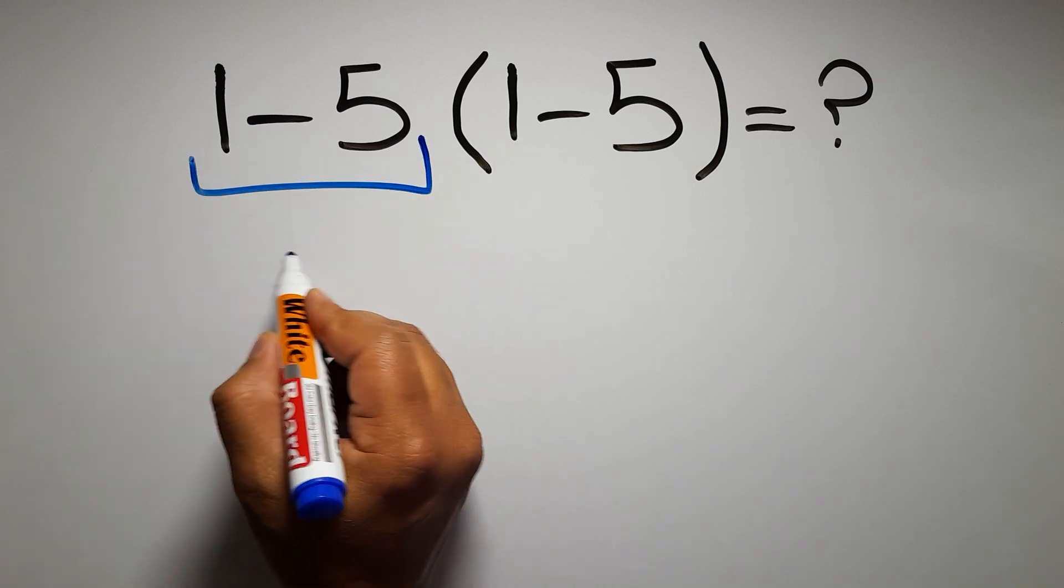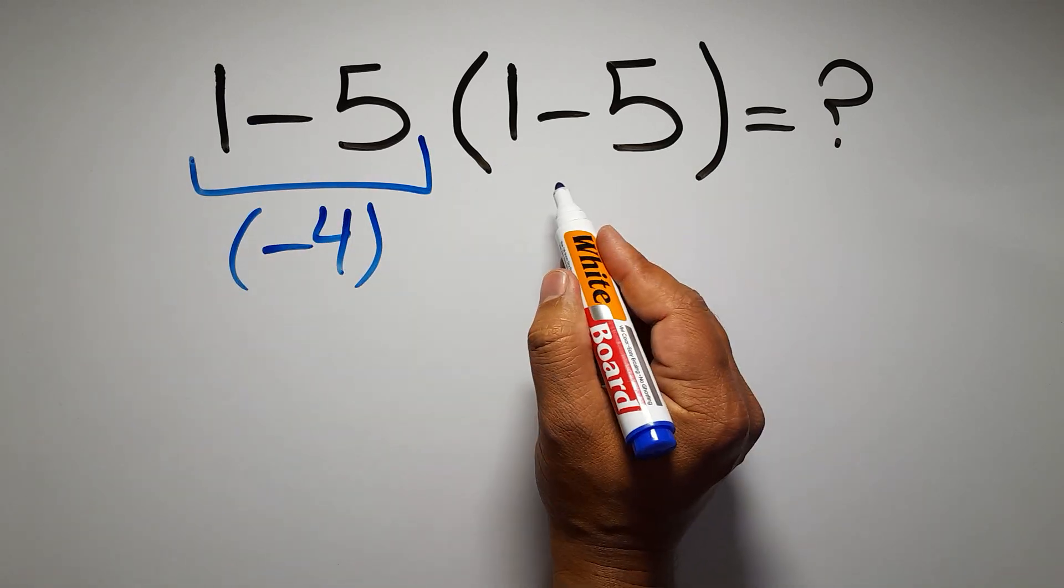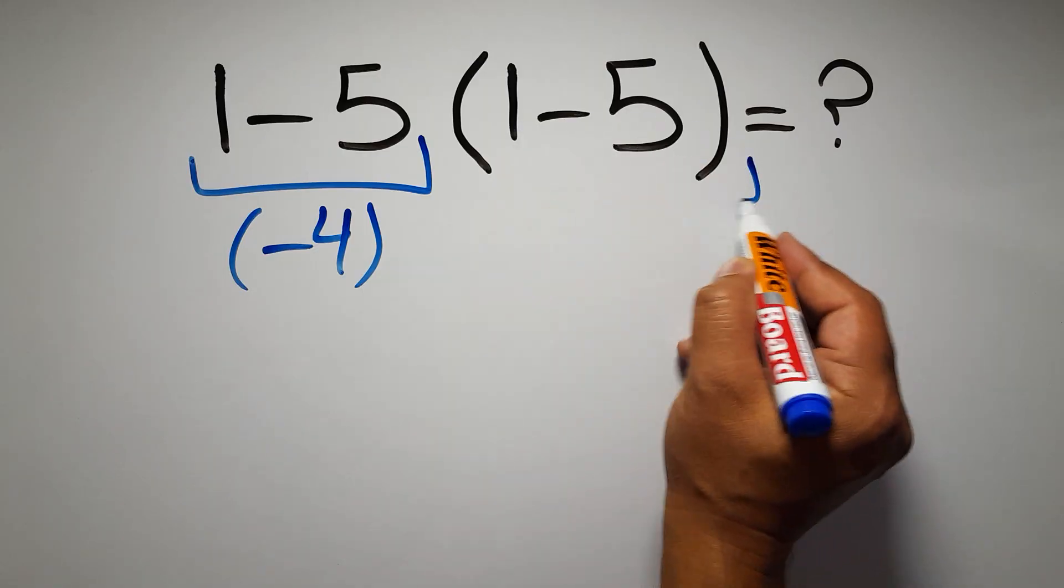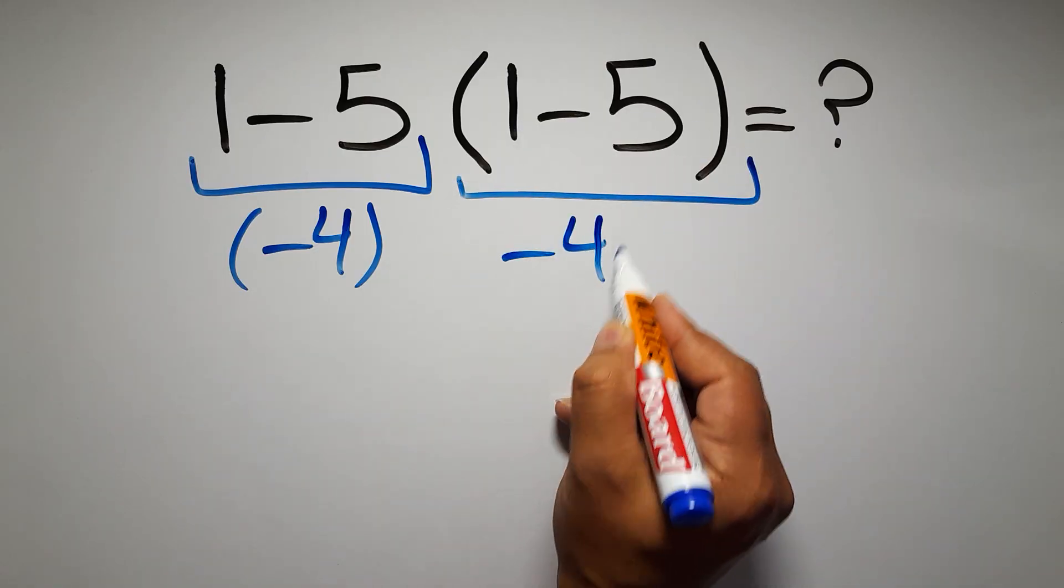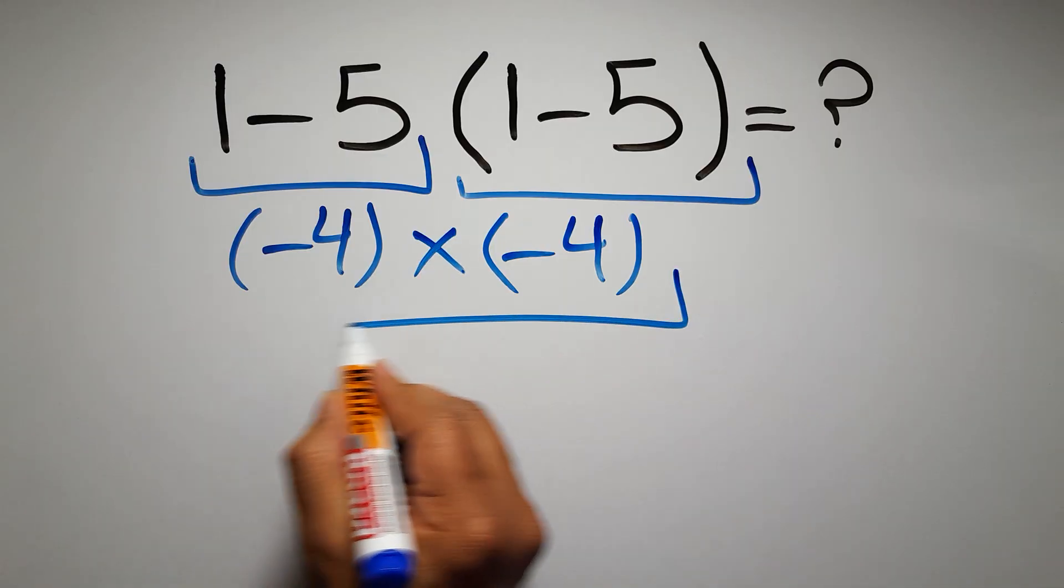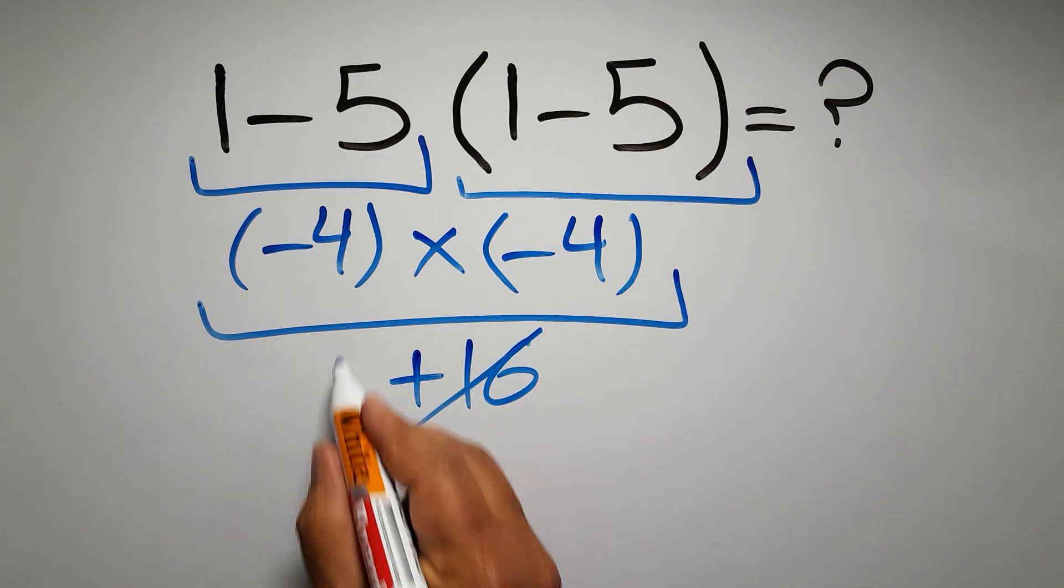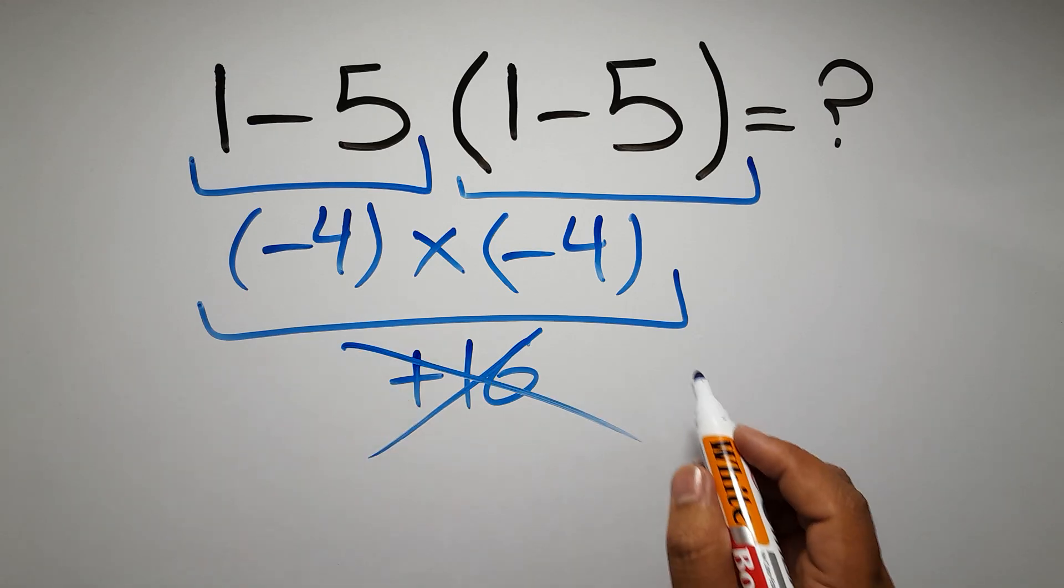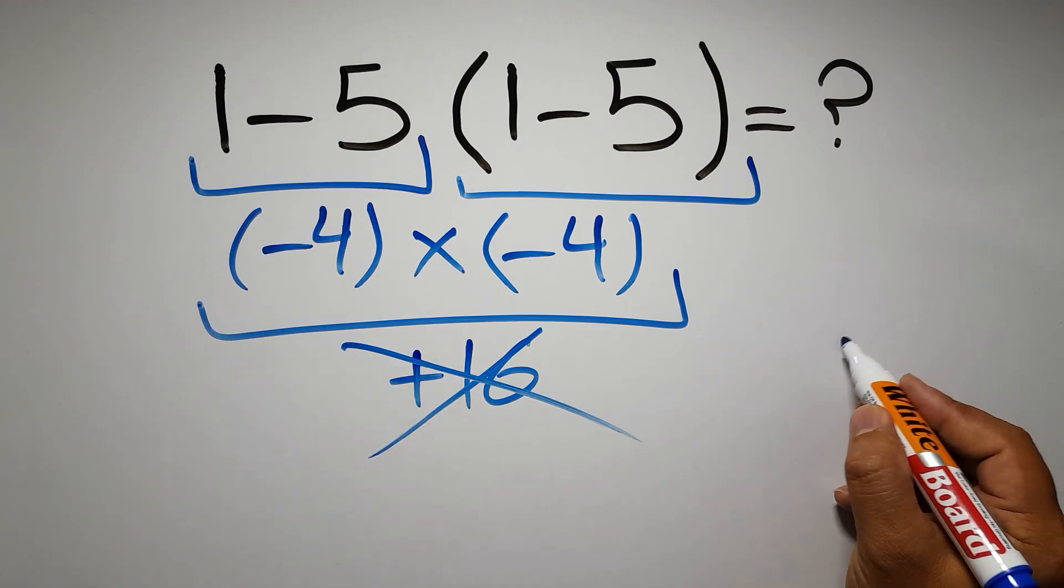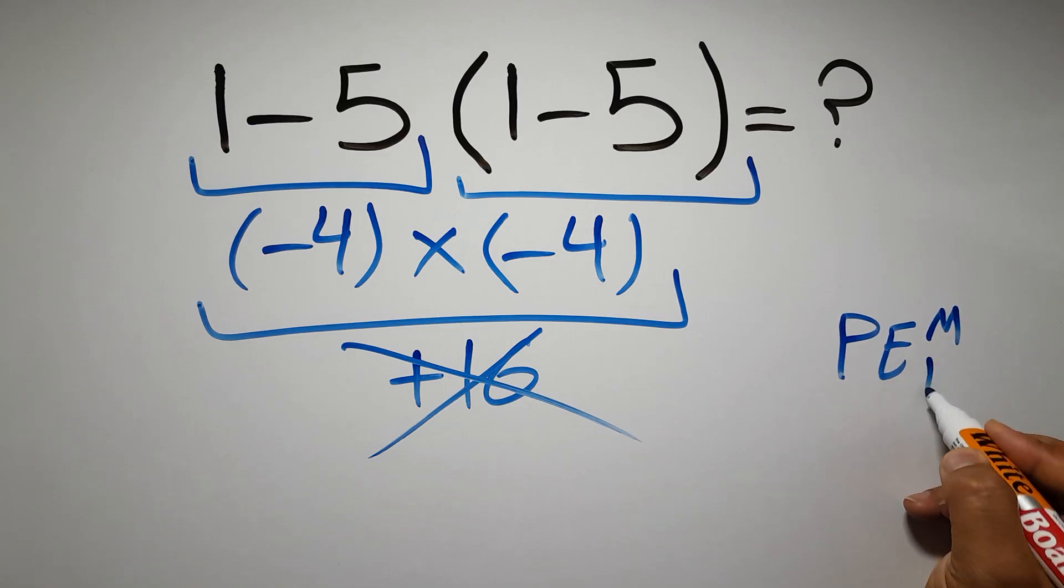1 minus 5 gives us negative 4, and again here inside these parentheses we have 1 minus 5, so negative 4 times negative 4, which equals positive 16. But this answer is not correct because according to the order of operations, first we have to do parentheses, then exponents, then multiplication or division, and finally addition or subtraction.